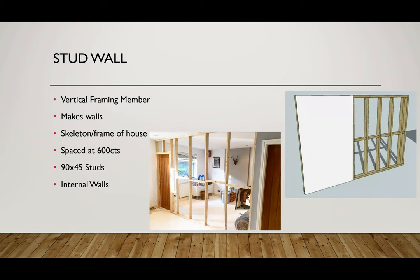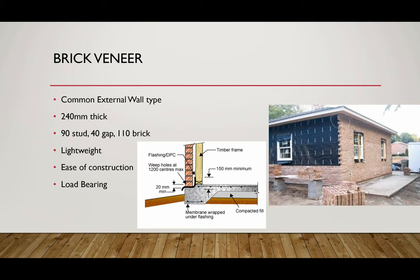Our stud walls are what's inside the house — it's a vertical framing member that makes the skeleton of the house. It's a 90 by 45 stud, and these are spaced at 600mm centres in our house. Looking at a cross-sectional wall, these studs are spaced a maximum of 600mm centres; in wet areas they go to 450mm. With studs you've got a bottom plate and a top plate.